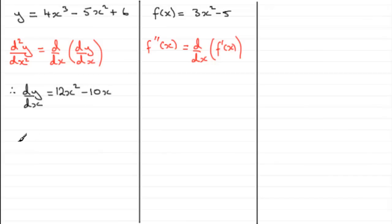So d²y/dx² means that we need to differentiate this with respect to x. So we can just say therefore d²y/dx² equals. And if we differentiate this first term, 12 times 2 is 24, drop the power by 1, you get 24x. Differentiate minus 10x with respect to x and you just simply get minus 10. And so there you go, there's d²y/dx².